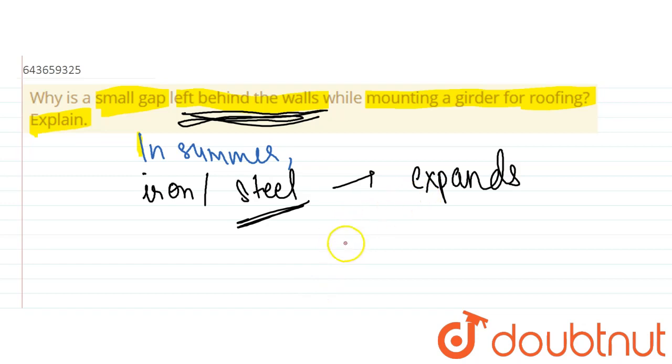So that when it expands, it does not create a crack in the wall. So mounting a girder for roofing, in that case, one end is fixed and the other end we mount it on a roller.